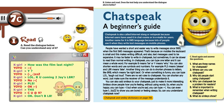People have wanted a short and easier way to write messages since 1993, when the first SMS messages appeared. That's because on mobiles the keyboard is small, and this makes writing difficult. Also, text messages used to be expensive. It may be faster to write in chat speak, but sometimes it can be slower to read.